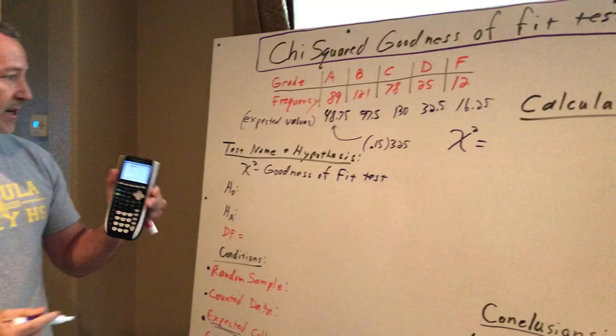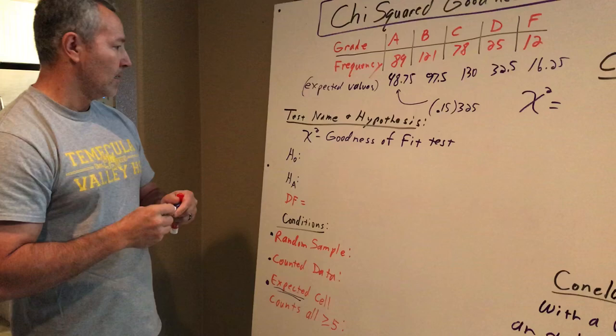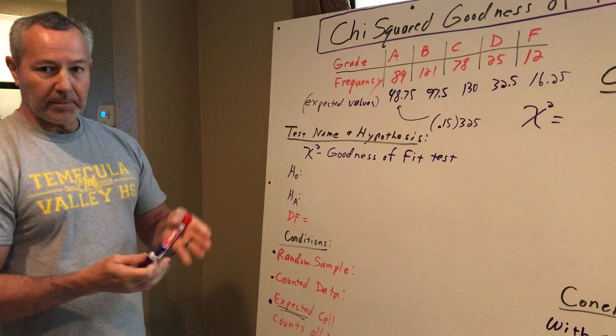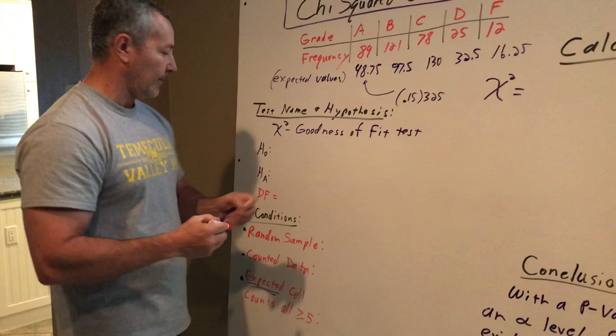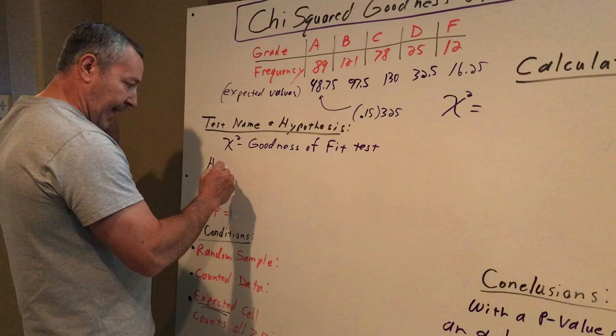Our test has the same format as our other tests. So we have the name of the test first. It's a chi-squared goodness of fit test. There's no parameter of interest. We're comparing two distributions, so I don't have that part of it. The null hypothesis is written in a sentence. And our null is that nothing's going on.